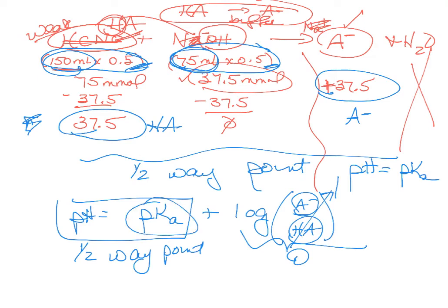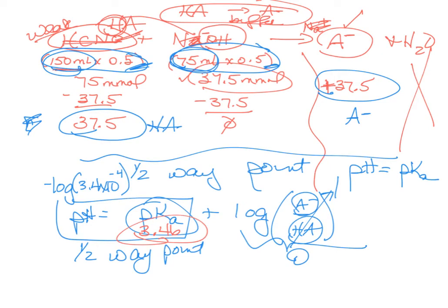The Ka was given as 3.4 times 10 to the minus 4, so pKa equals 3.46. So pH equals 3.46 — that is the correct answer.